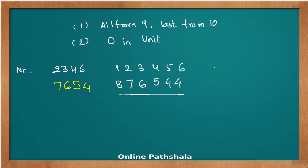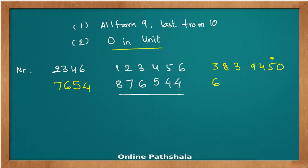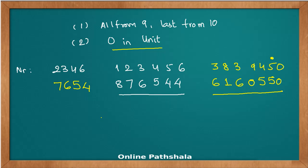Now a case with a trailing zero: find the complement of 3839450. We use all from 9, last from 10, but because there is a 0 in the units place, the subtraction from 10 applies to the digit 5 before it. So: 9 minus 3 is 6, 9 minus 8 is 1, 9 minus 3 is 6, 9 minus 9 is 0, 9 minus 4 is 5, 10 minus 5 is 5, and bring down the 0. The complement is 6160550.